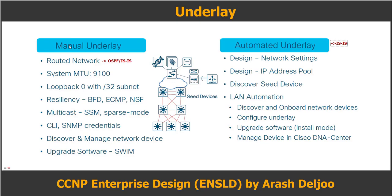There are two methods for underlay implementation: manual and automated. In manual underlay, a routed network can be implemented with system MTU, loopback configuration, resiliency features like BFD and ECMP, NSF, multicast-enabled underlay with SSM or source-specific multicast and sparse mode multicast, CLI SNMP credentials, device discovery and management, and software upgrades. In automated underlay, DNA Center handles network settings, IP address pools, seed device discovery, LAN automation, device onboarding, underlay configuration, software upgrades, and device management.